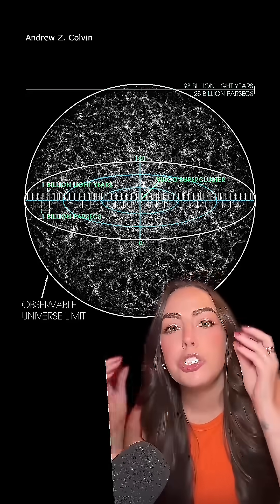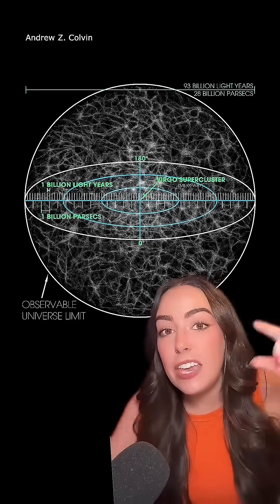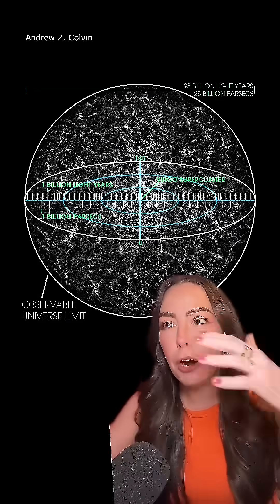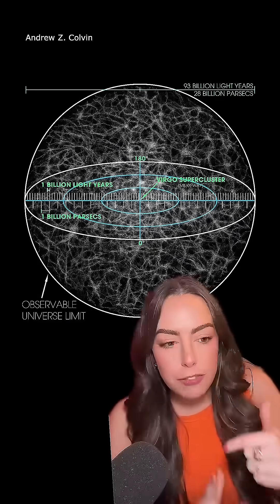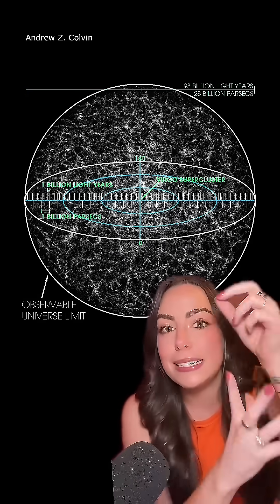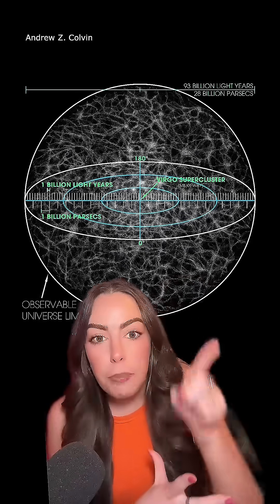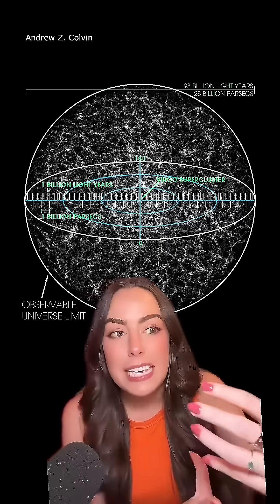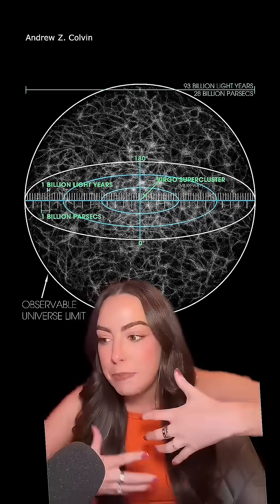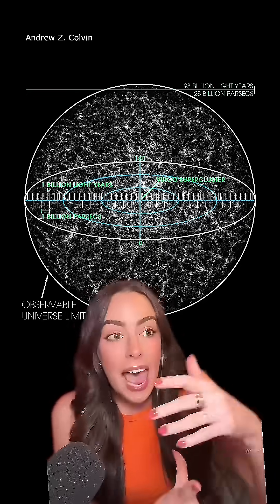Scientists think that there are two trillion galaxies in the observable universe, which is the part of space that the light has traveled to us. It's the part of space that we can see, but there's this whole other part of space that we can't see because it's so far away and space is expanding and its light hasn't reached us yet.